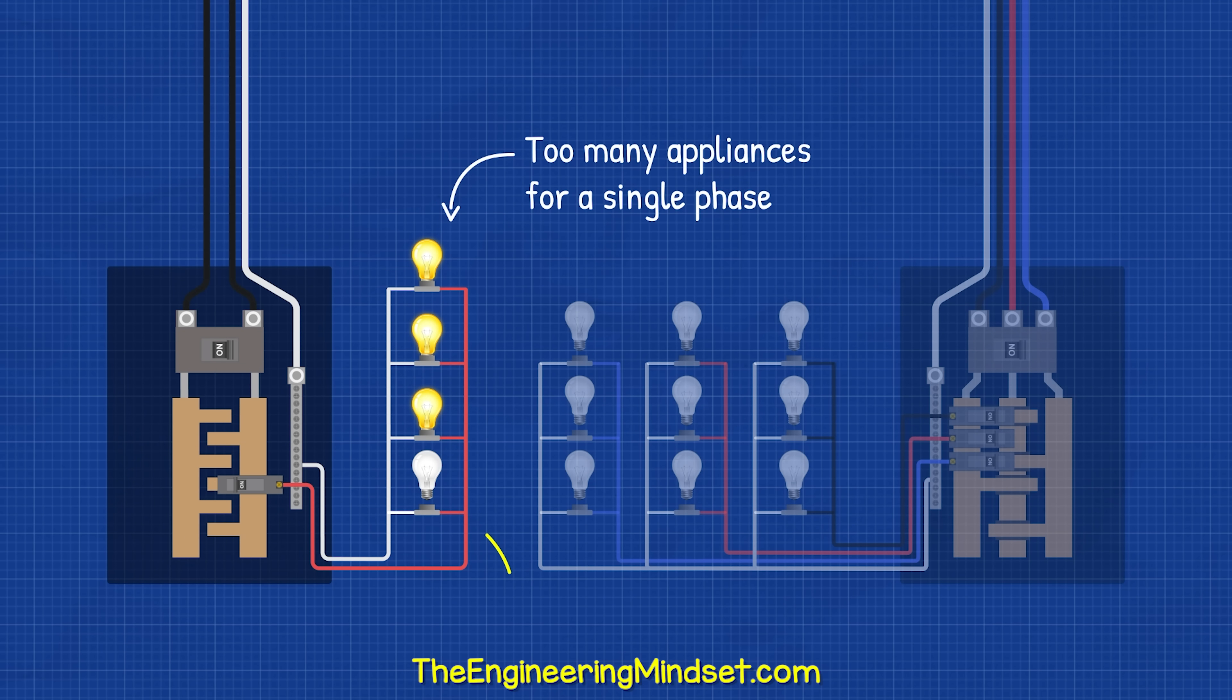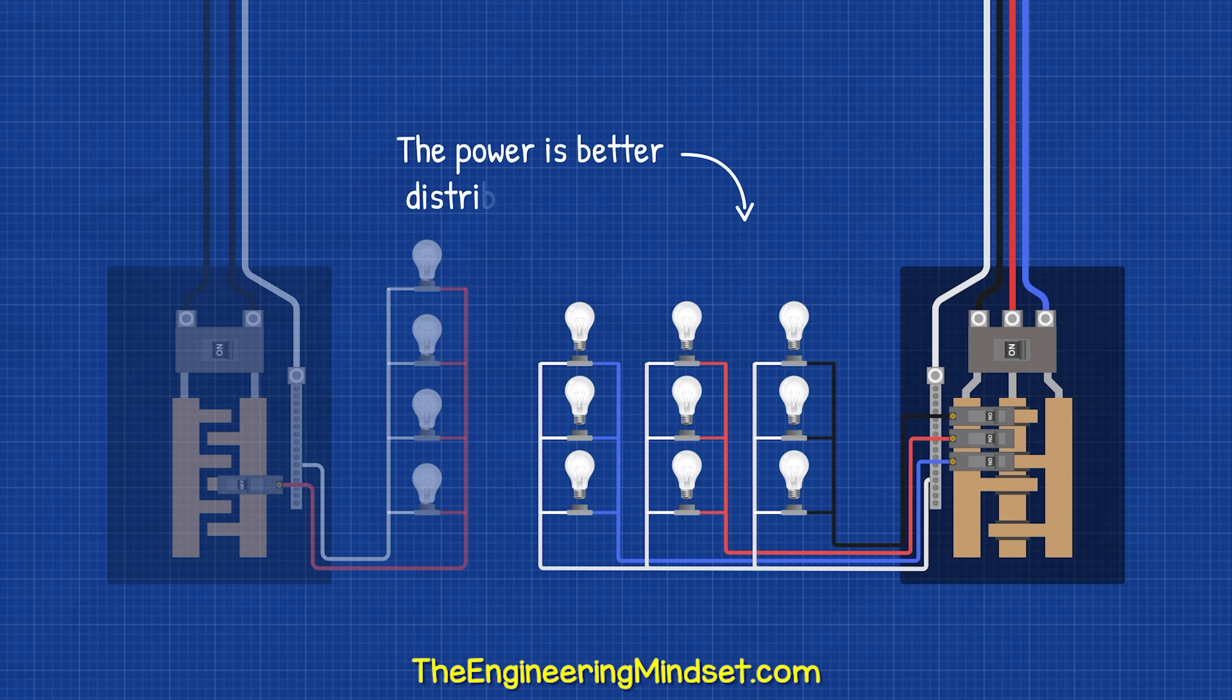If we connect too many appliances to a single phase, we will overload the circuit and trip the breaker. Three phase allows us to distribute the power so that we can connect more appliances.